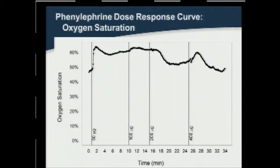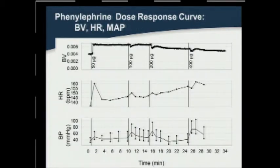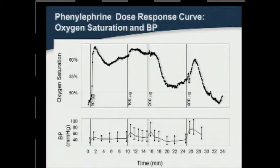When low-dose phenylephrine was administered, a dramatic increase in oxygen saturation of the gastric conduit results. However, with escalating doses of phenylephrine, the response becomes more variable, and less correlation is seen with blood volume and heart rate curves. However, when oxygen saturation and mean arterial pressure are compared, there does appear to be direct correlation.